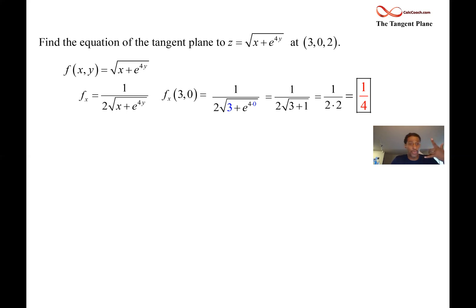Let me move to the y partial. Starts off the same way. One over two square roots of x plus e to the 4y. And then we chain rule though. We take the derivative of the inside function with respect to y. It's 4e to the 4y, not a 1 like above with respect to x.